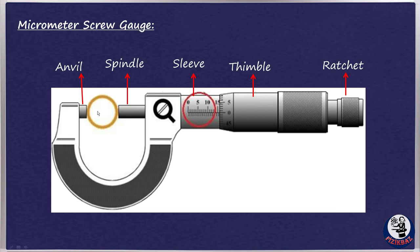The object whose diameter is to be measured is placed between anvil and spindle. The ratchet, which is a kind of knob, is turned to tighten spindle until a tick is heard.